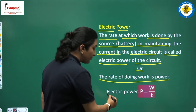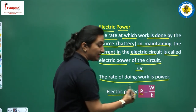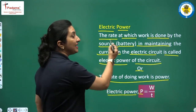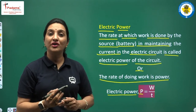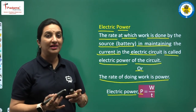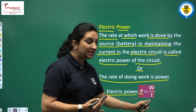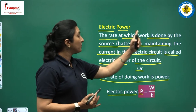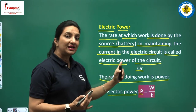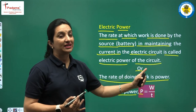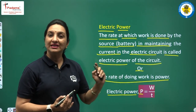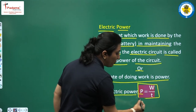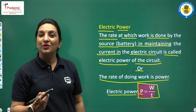The electric power, denoted by capital P, can be written as W upon T. The rate at which work is done — whenever we use the word 'rate,' time has to be taken in the denominator. So, P = W/T, which is the rate of doing work by the source in maintaining the current in the electrical circuit.